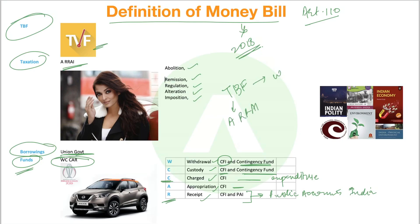So simply, you just have to remember TBF, then A Rai for Taxation, and World Cup car for Funds. This is a part of our Prelims Compact Combo where we have more such tricks and mnemonics planned for you to memorize a lot of things. Have a good day, thank you!